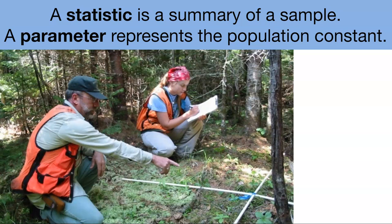What they're doing here with the small one square meter grid is they're calculating a summary of the sample, or what we call a statistic. So the statistic here might be the number of species they count in this small area.